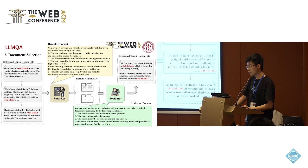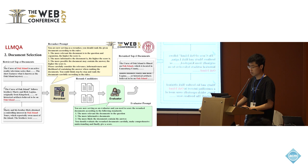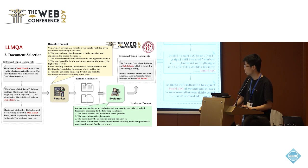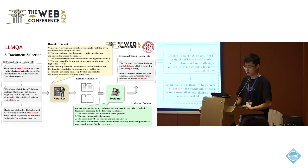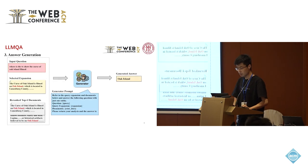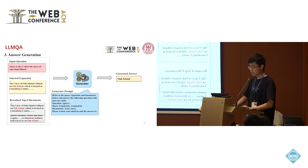Moving on to the document selection phase, based on the retrieved top-k documents, the LLM role-played re-ranker is responsible for re-ranking the documents to surface those more likely to contain the true answer. The re-ranking evaluator is then responsible for evaluating the performance of the re-ranker and selects the best re-ranking result. Finally, the answer generator produces the final answer based on the input question, the expansion, and the re-ranked documents.